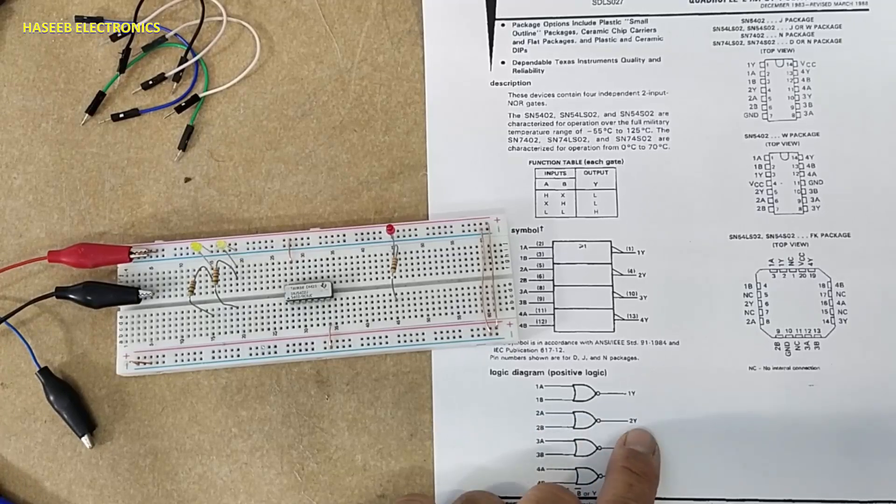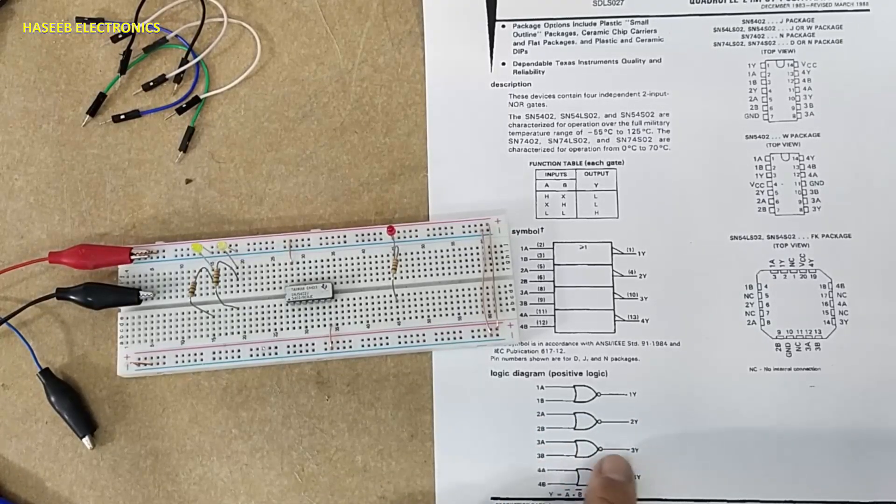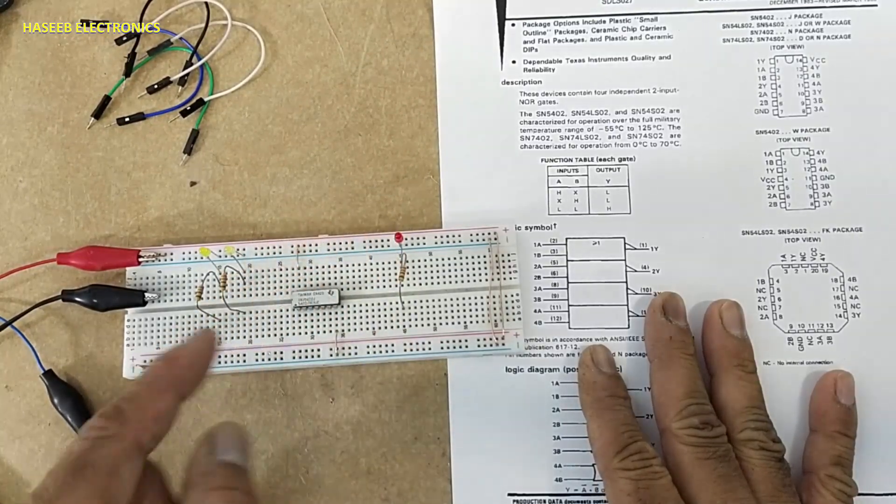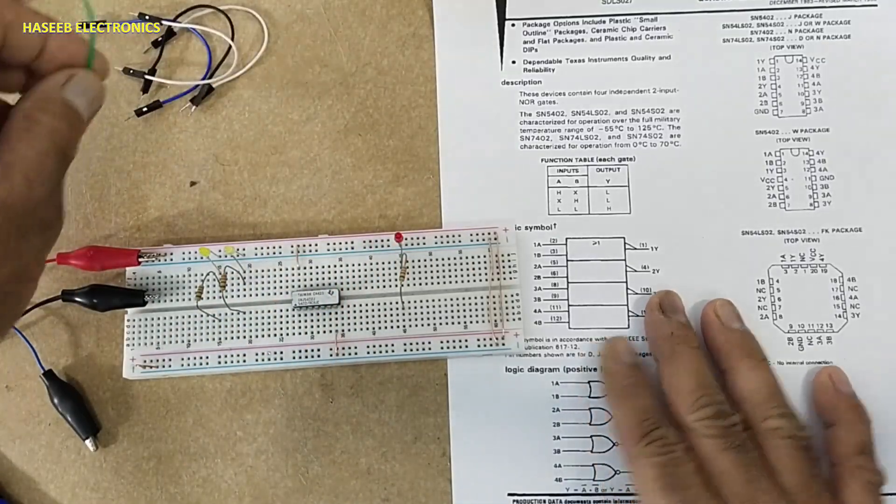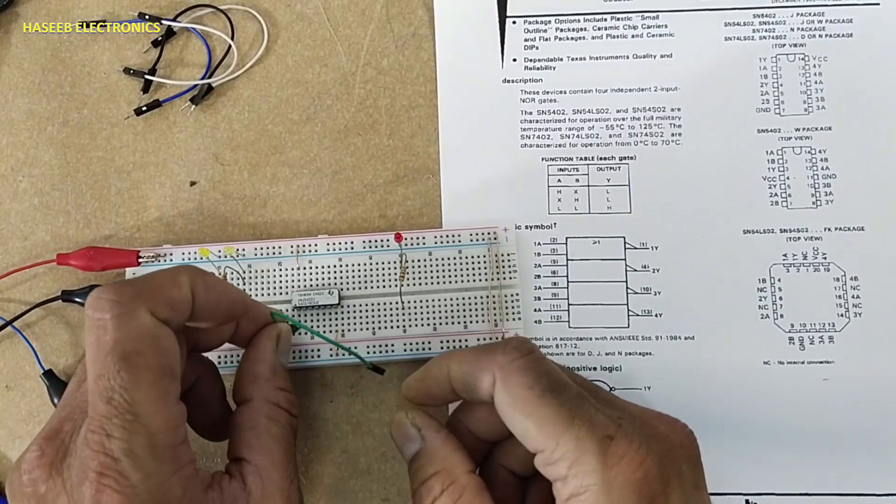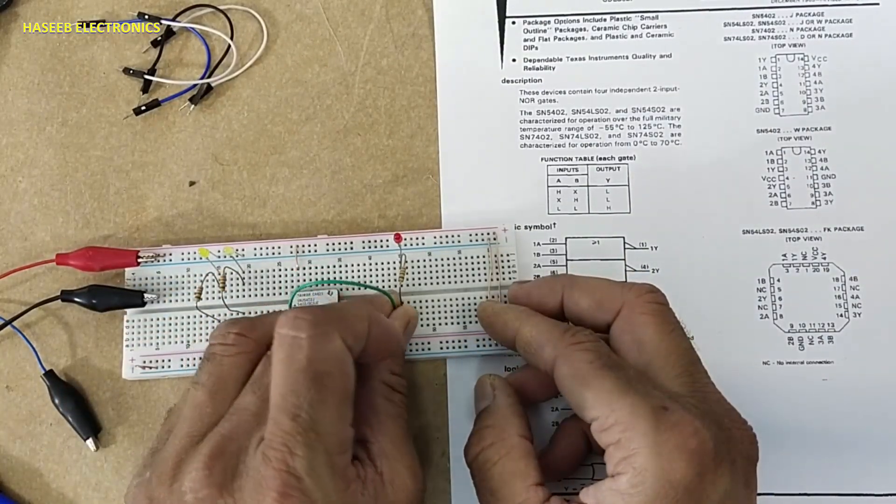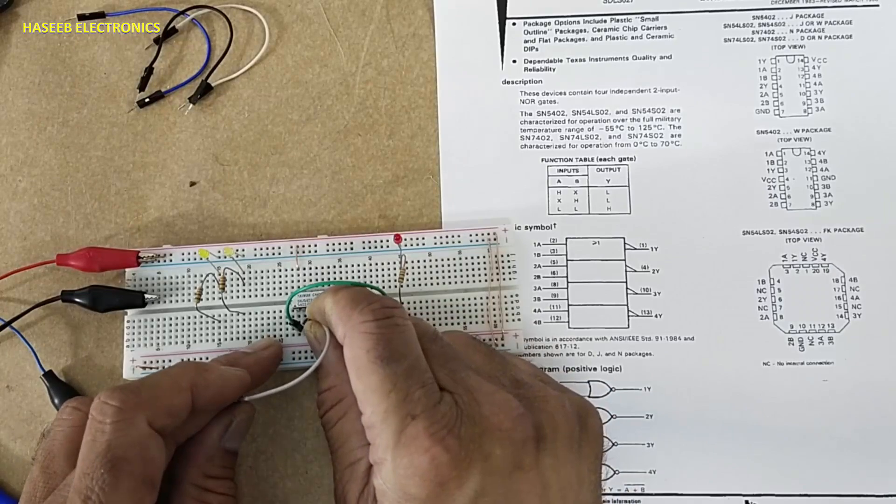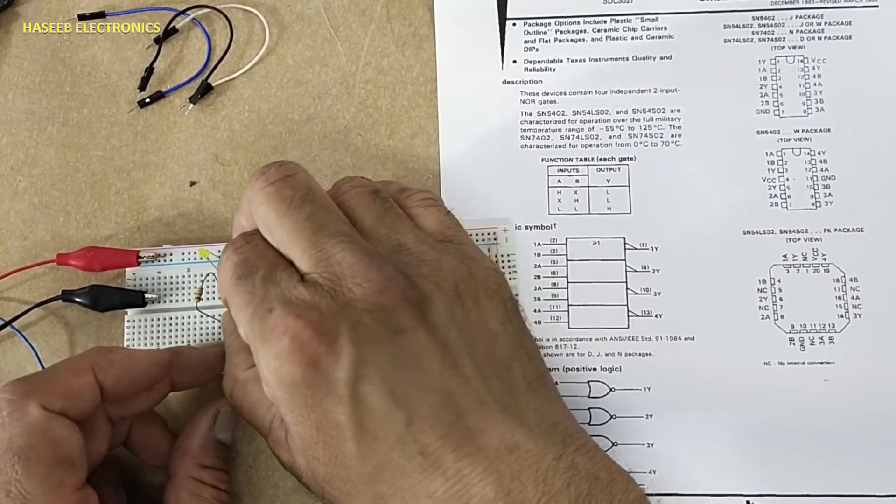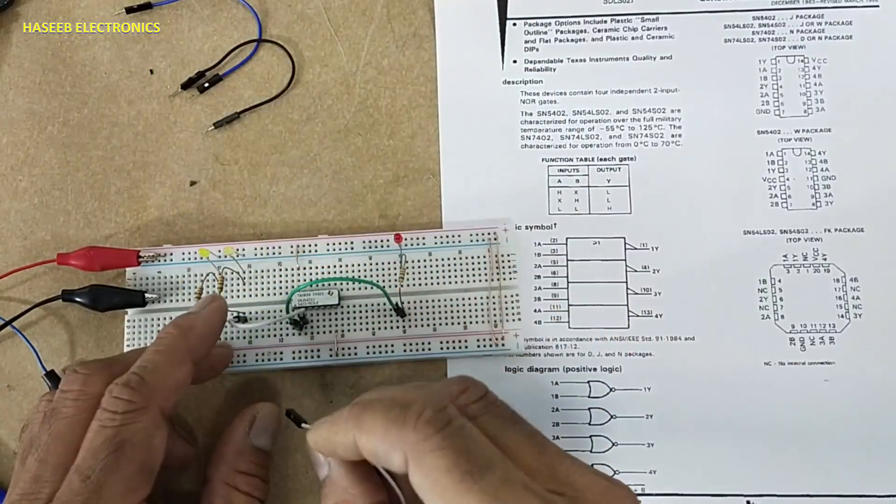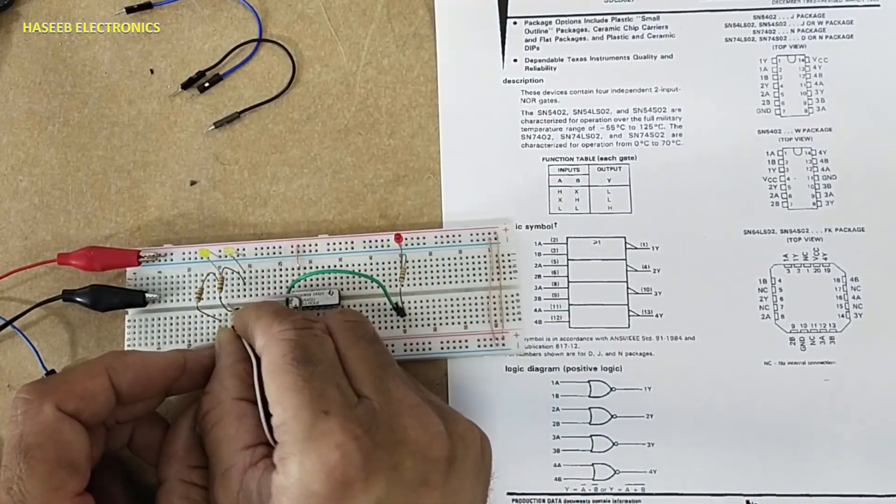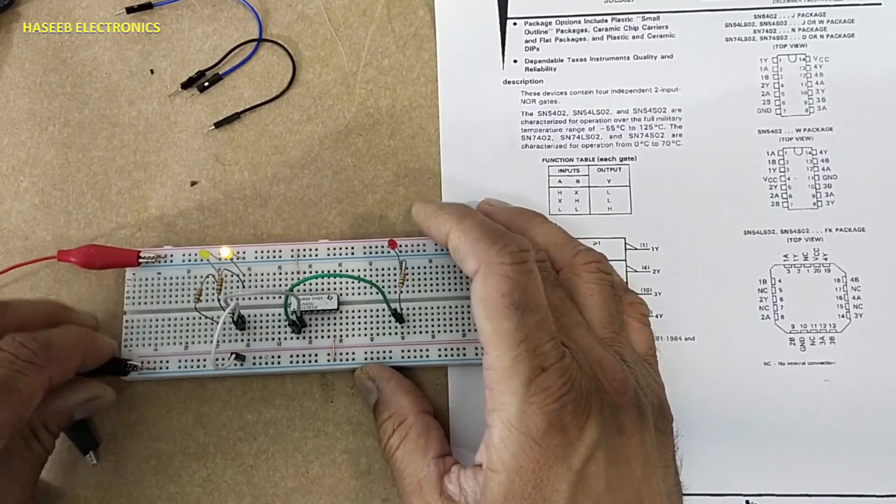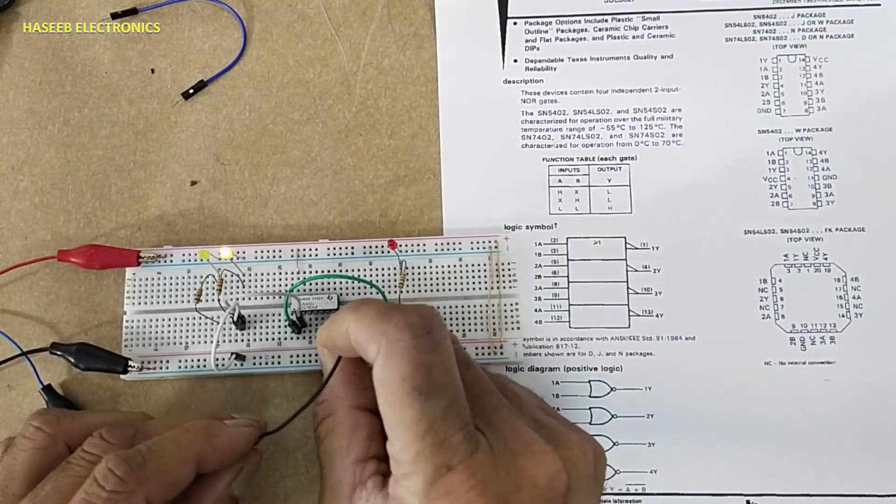330 ohm resistance connected to anode, cathode grounded. This is for output. First output from pin number one. Pin number two and pin number three are inputs. Third gate input—same. Monitor input: 330 ohm resistance with one LED.